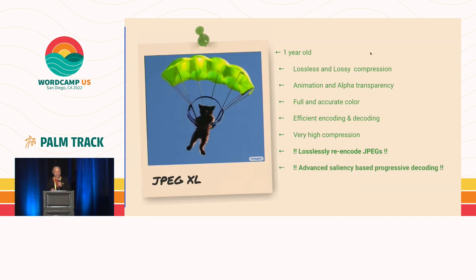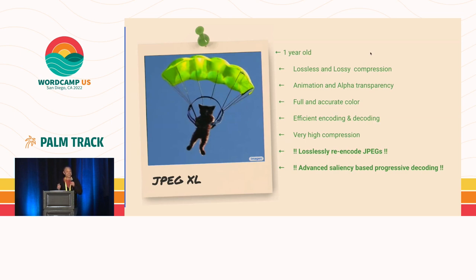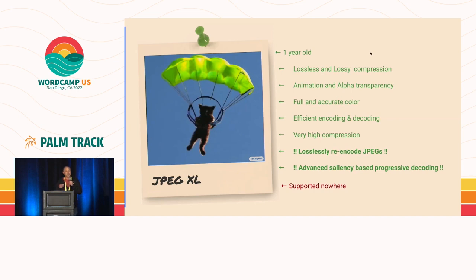JPEG XL also has advanced saliency-based progressive decoding, where you can decide where focus comes into play first. For example, with a picture of a person against a background, you could mask out their face and have it come into detailed focus before the background loads. Really cool — but you'd need some authoring tool to mask those areas, and none of that exists yet. And JPEG XL is not supported anywhere, so it may never make it into the web. It's behind a flag in Chrome Dev but it's questionable whether it will ever be turned on, partly because it doesn't really offer much advantage over AVIF, and there's a limit to how many image formats browsers will want to support.